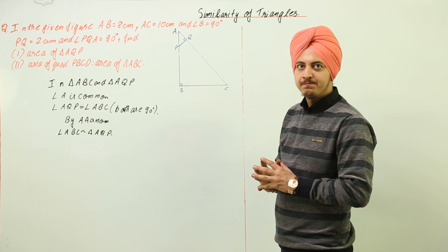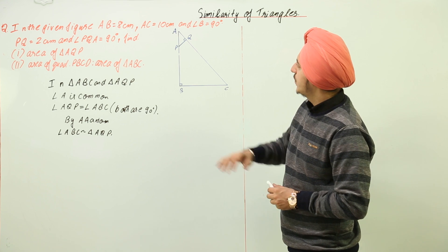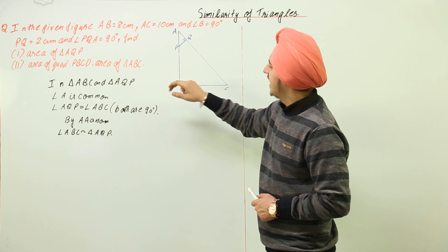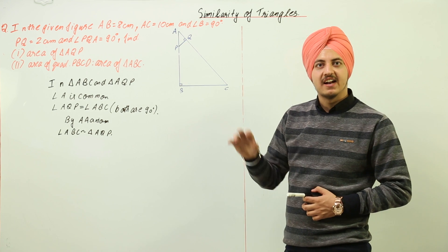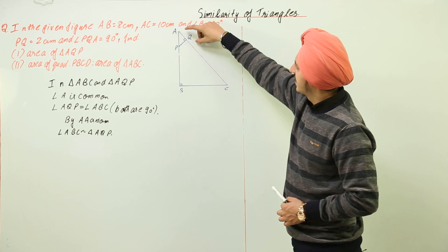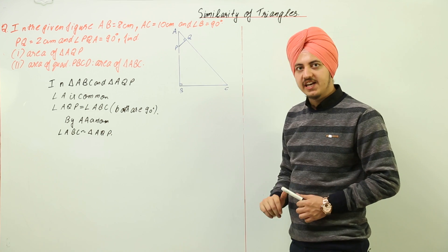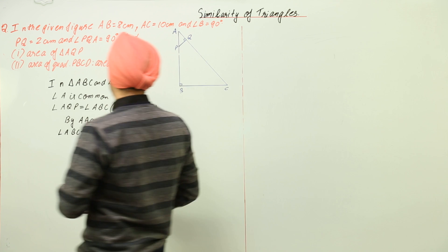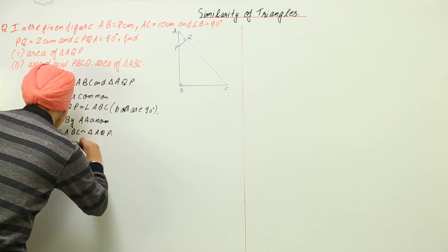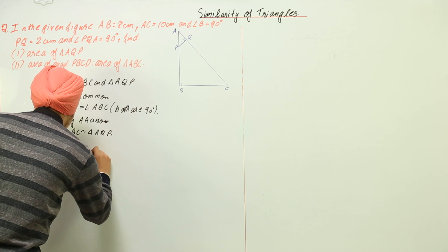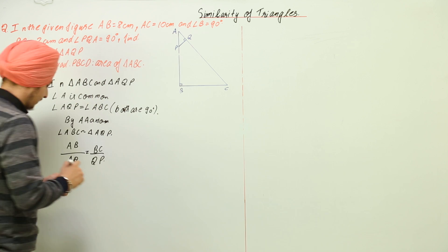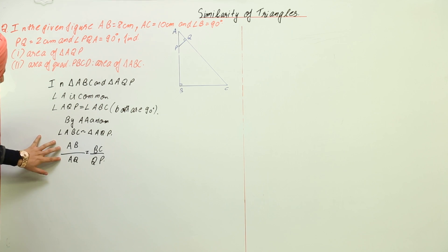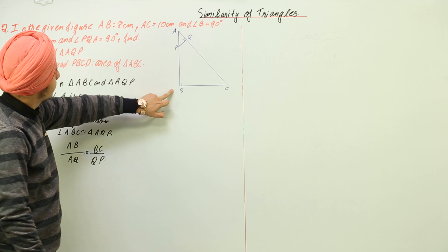We are given PQ's length. If we find the ratio of corresponding sides and equate them, we can find the length of AQ and then calculate the area. From the similarity, we get AB over AQ equals BC over QP.